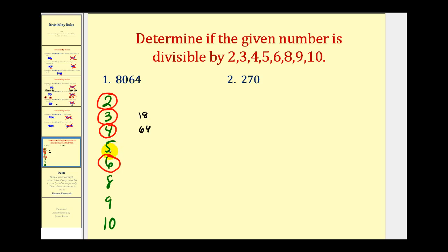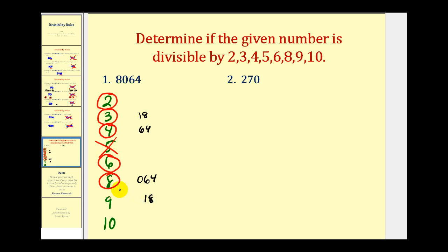For 5, the number has to end in a 0 or 5, which it doesn't, so it's not divisible by 5. To determine if it's divisible by 8, we look at the last three digits — 064 — and since 64 is divisible by 8, so is the given number. To test for 9, the sum of the digits is 18, which is divisible by 9, so the given number is too. For 10, it has to end in a 0, which it doesn't, so it's not divisible by 10. So it's divisible by 2, 3, 4, 6, 8, and 9.